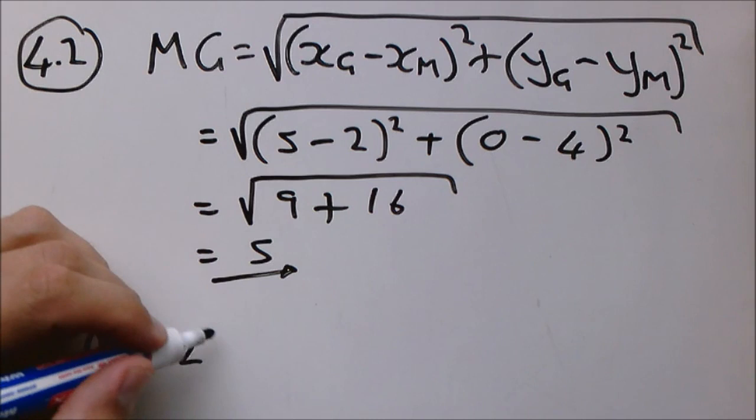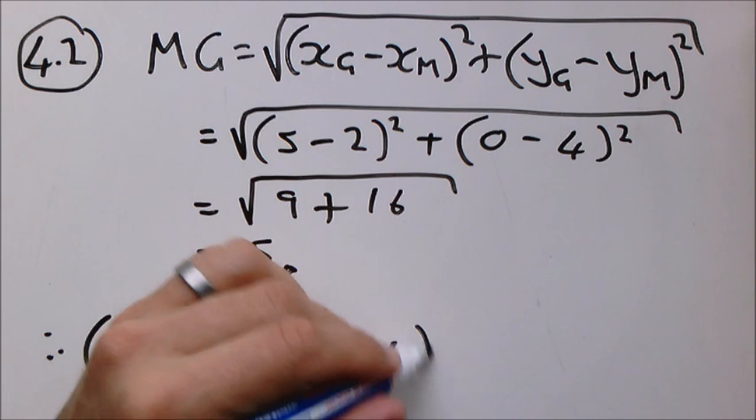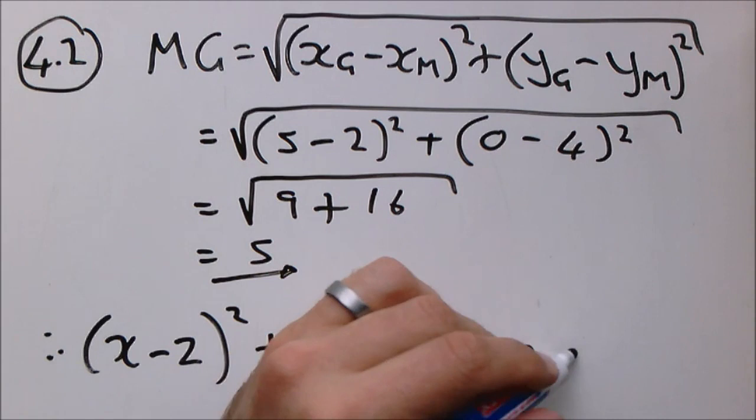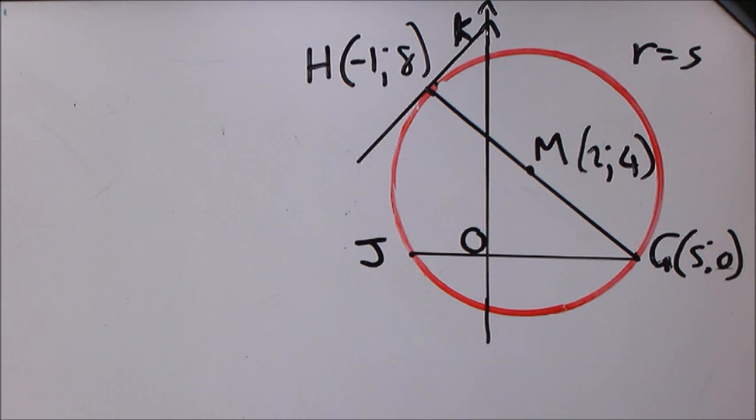Therefore, our equation is (x - 2)² + (y - 4)² = r². Now r is 5 so this becomes 25.